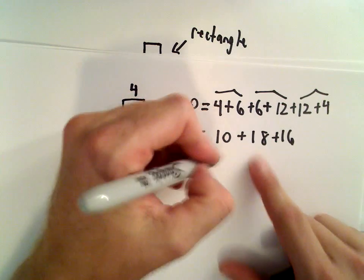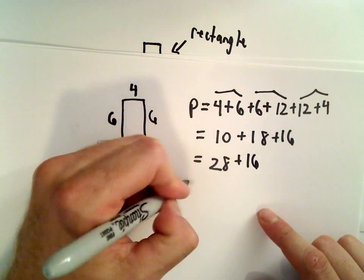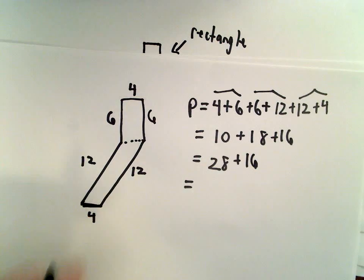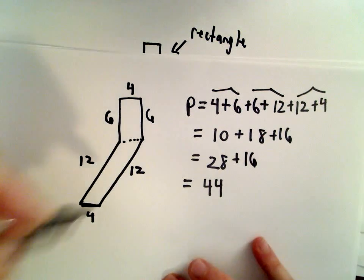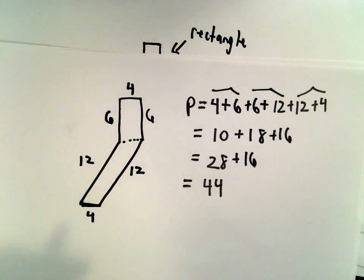Let's see, 10 plus 18, that's 28. And 28 plus 16, that's going to give us the value of 44. So the distance around this figure, or the perimeter, is going to be 44 units.